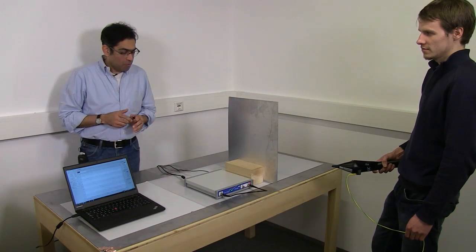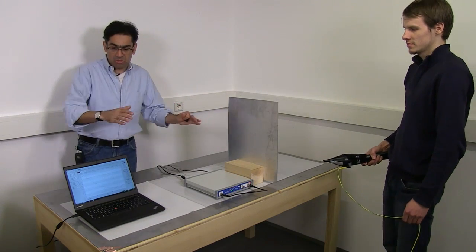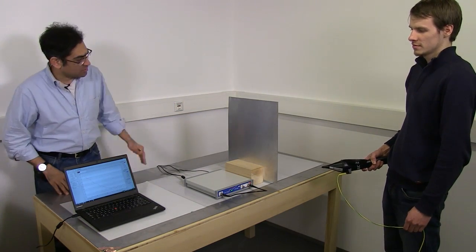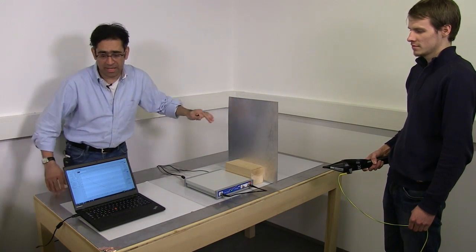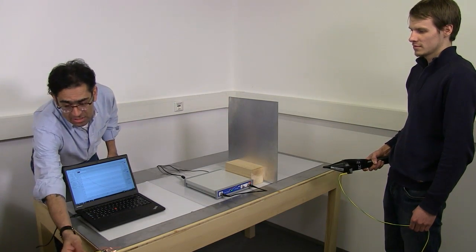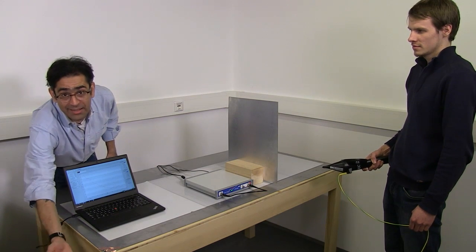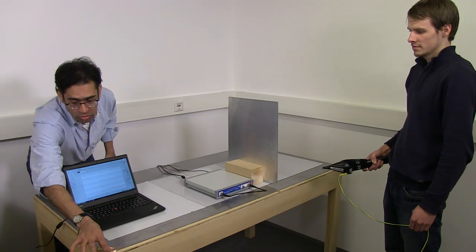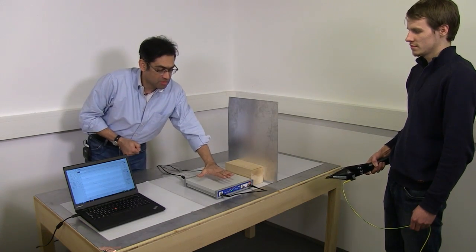So for an ESD pre-compliance test, this is a typical test setup. You have got a vertical coupling plane, you have got a horizontal coupling plane. This part is actually tied via about 1M to a metal plane on the floor to give you good coupling down to the floor. And the equipment on test will sit over here.